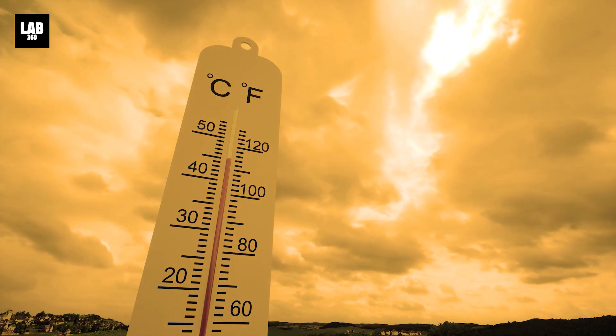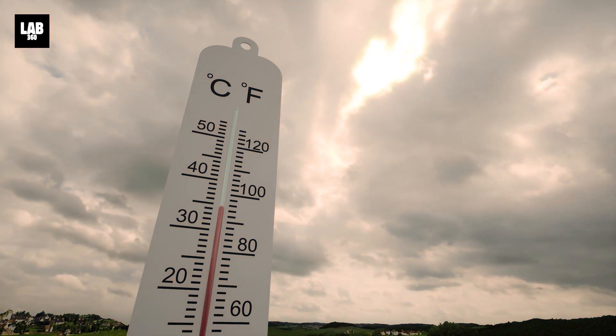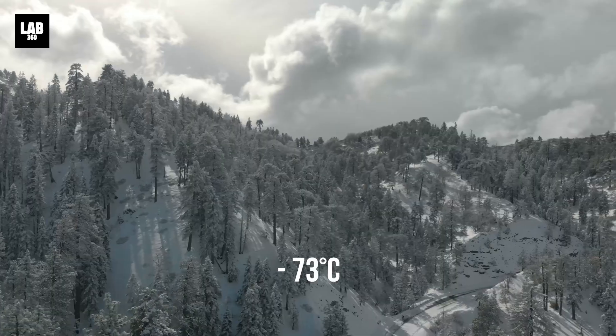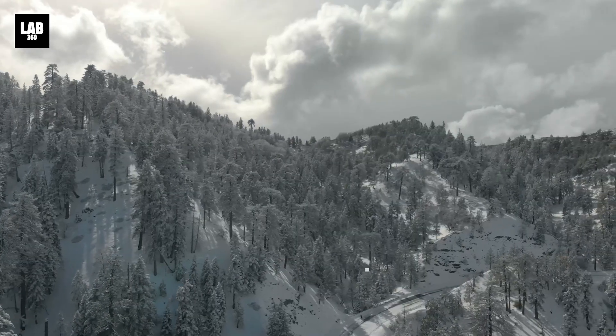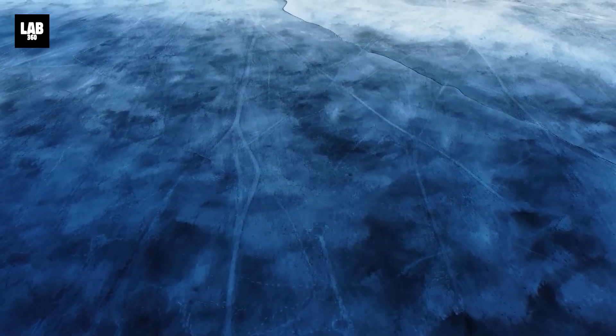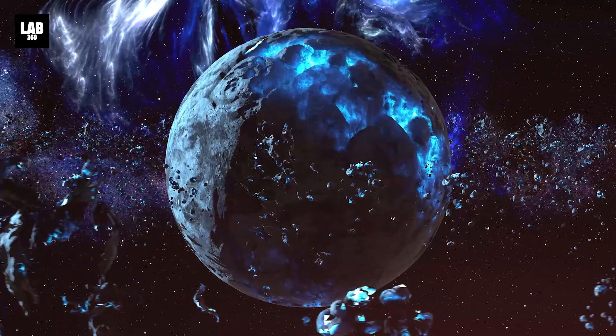On Earth, temperatures would fall dramatically. Within days, the average global temperature could plummet to minus 73 degrees Celsius, or minus 100 degrees Fahrenheit, causing the oceans to freeze. Over time, the atmosphere would also cool and the planet would become an inhospitable ice ball.